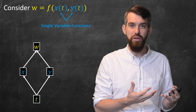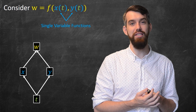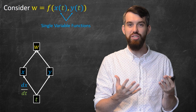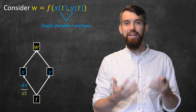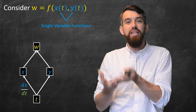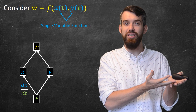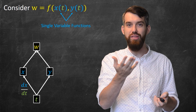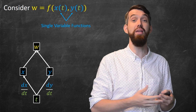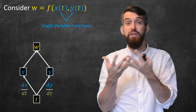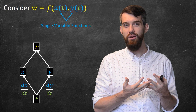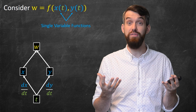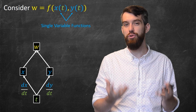We can use derivatives to describe the relationship between these variables in the dependency diagram. The derivative of x with respect to t, dx/dt, tells me how much x is changing for a small change in t. Likewise for y, there's a dy/dt. Notice that because x and y are single variable functions, these are full derivatives — I use the lowercase d notation for single variable derivatives.